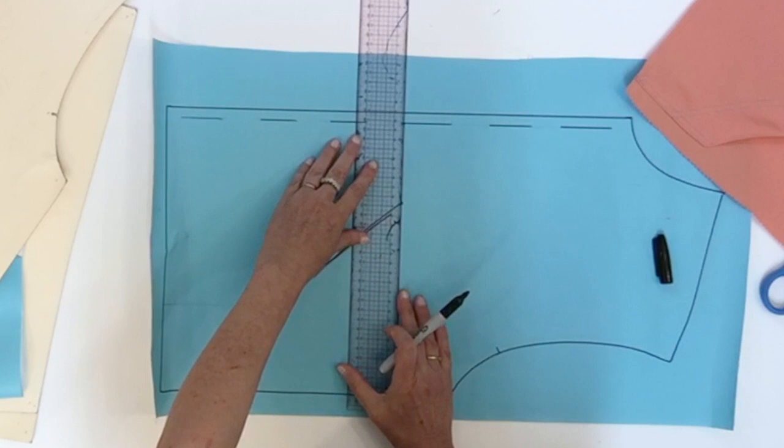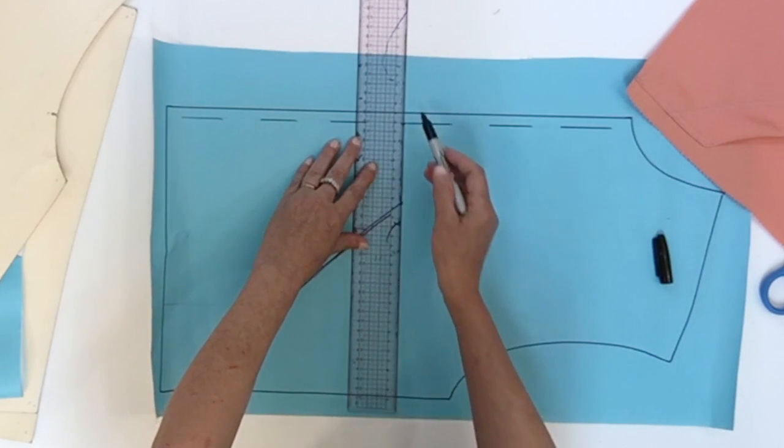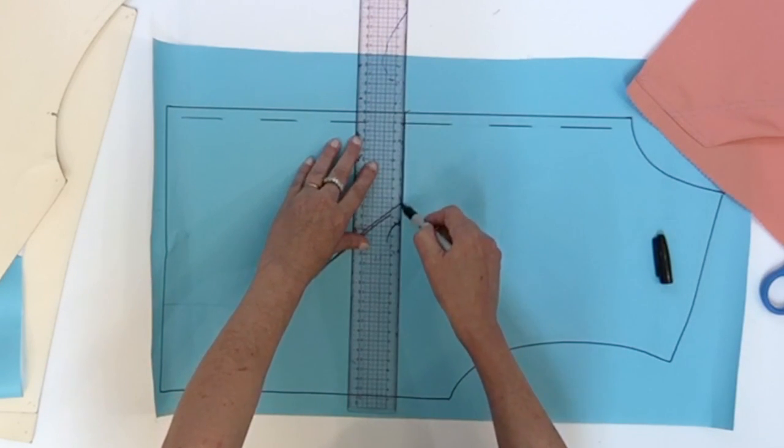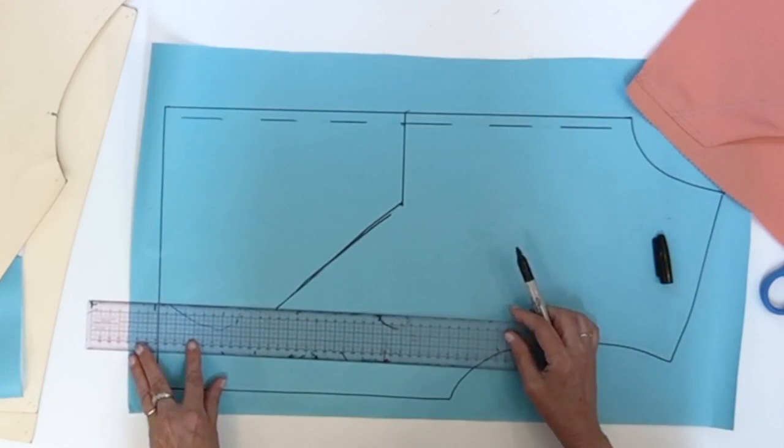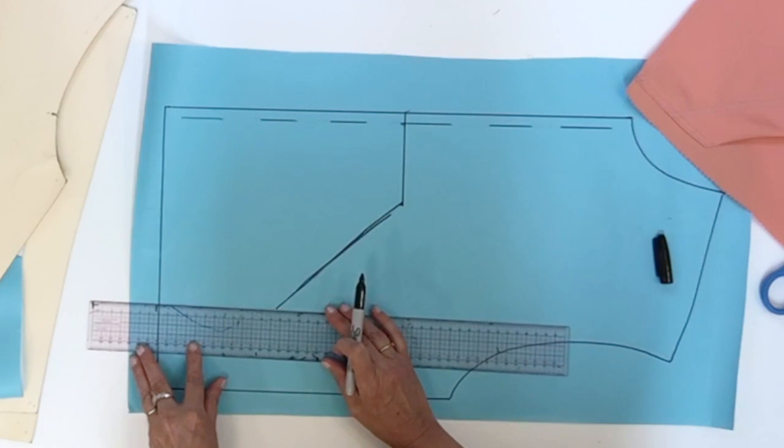Then with your ruler, you're going to square from center front touching the top part of your diagonal line, and same thing at the bottom, square from the bottom touching the bottom part of the diagonal line.